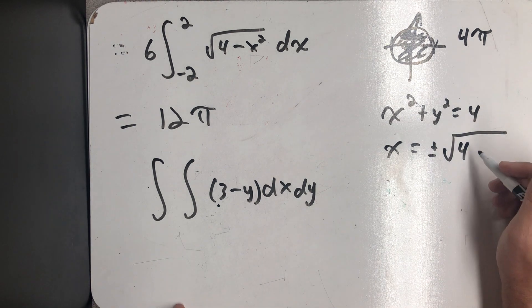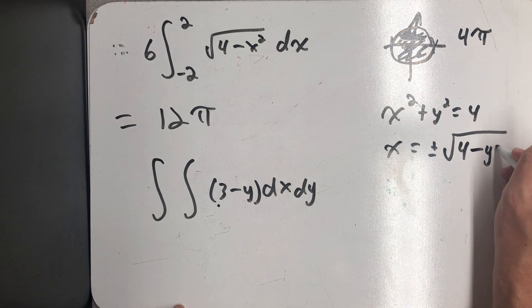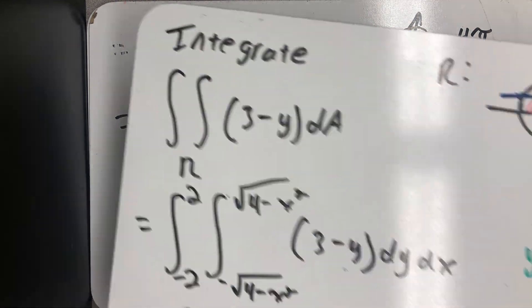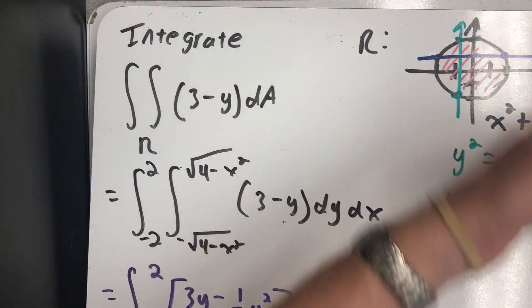So x is equal to plus or minus the square root of 4 minus y squared, a left function and a right function. As x increases, I hit the left function and then the right function, the one where all the x's are negative,